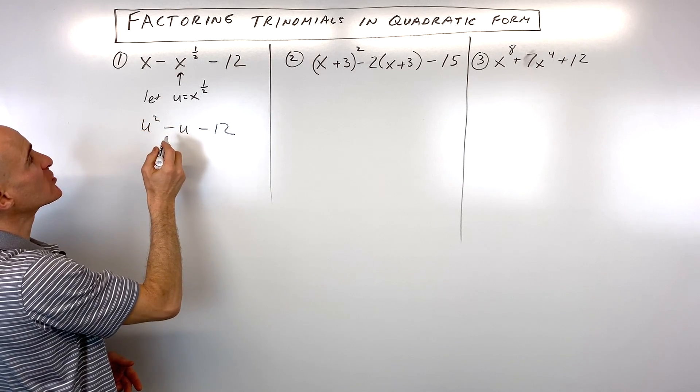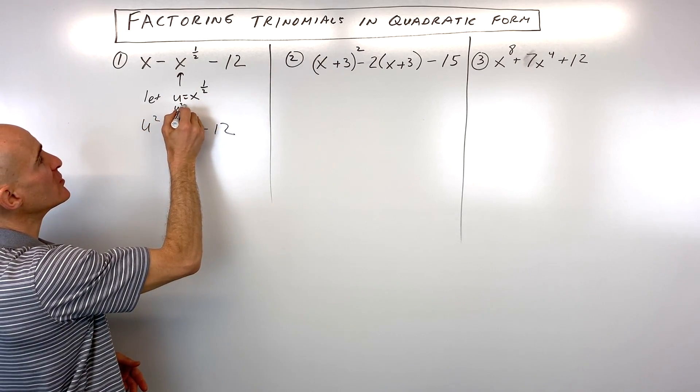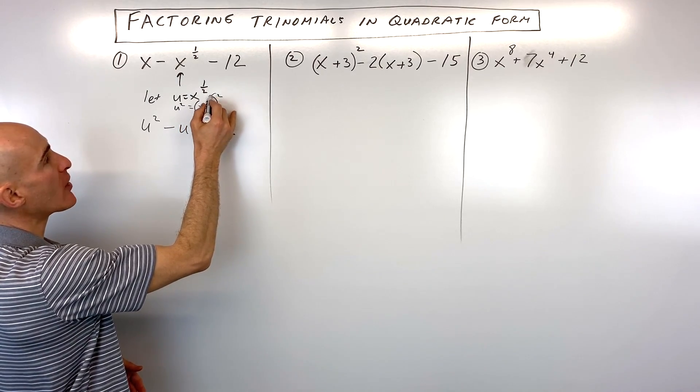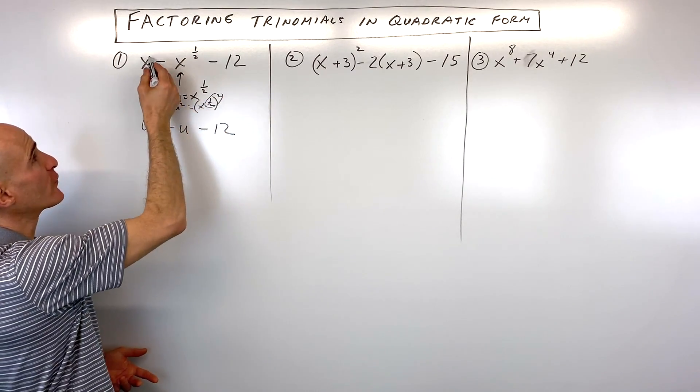And this is going to be u squared, because if you think about u squared equals x to the one-half to the second power, power to power you multiply, that's going to give you x to the first.